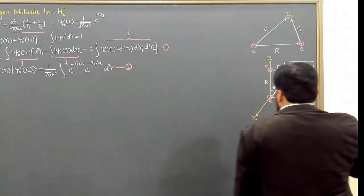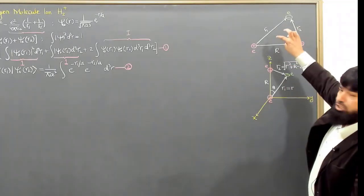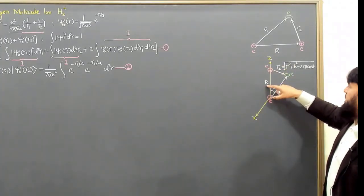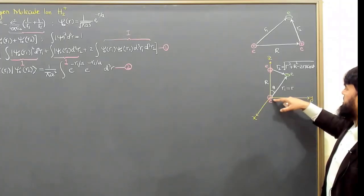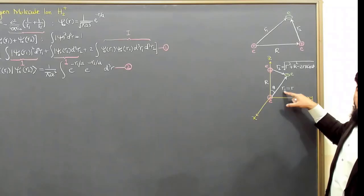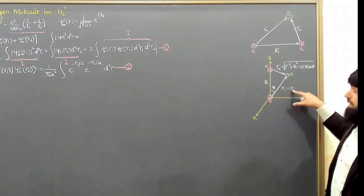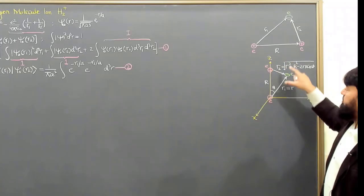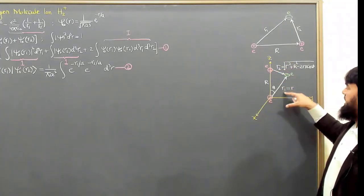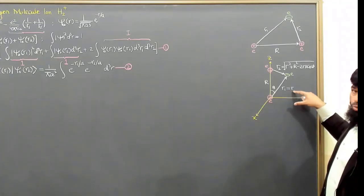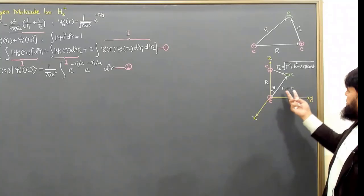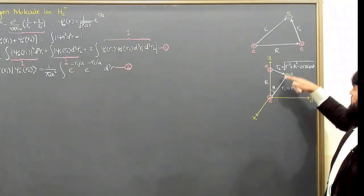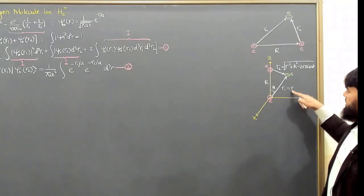So what we do is use this tactic: we reorient the geometry by moving it so that the proton distance is R. One proton's distance to the electron is R1, which I am considering equal to R. When you reorient along the z-axis, these are the distances R1, and R1 is equal to R.